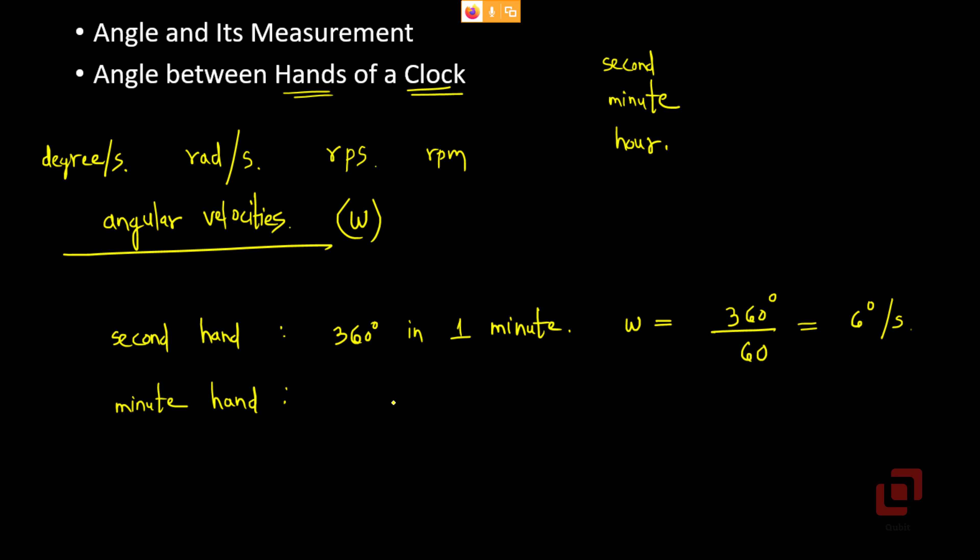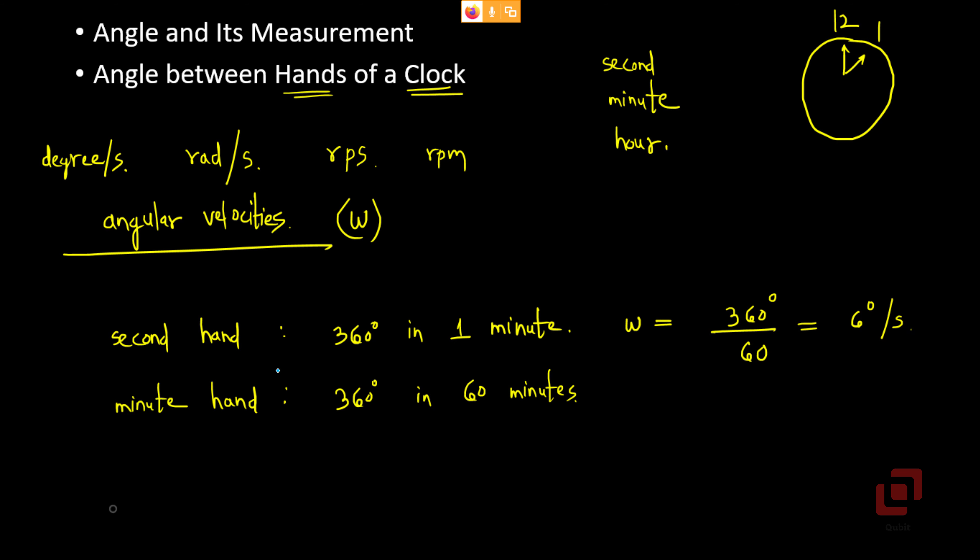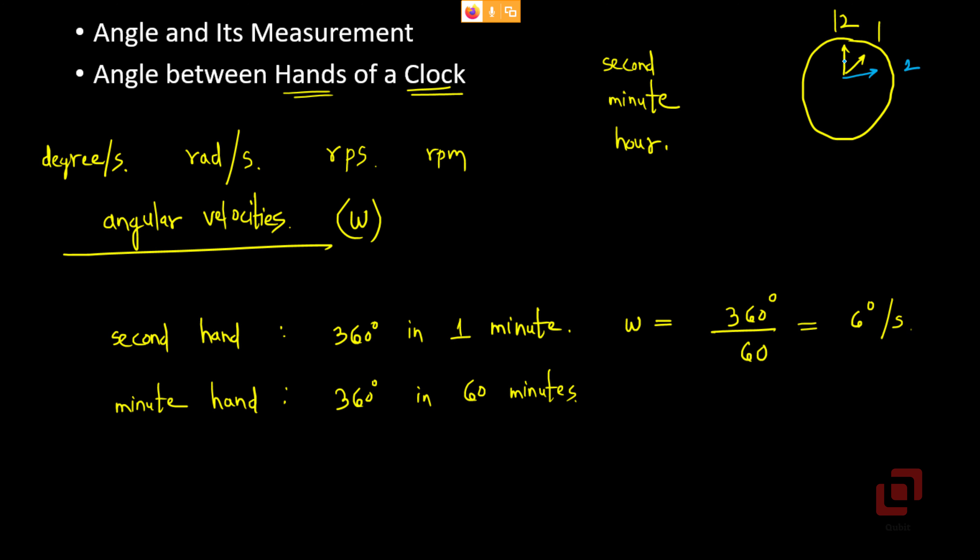Then let us go to minute hand. Now, minute hand covers 360 degrees in 60 minutes. So what will the angular velocity be? Because if it is currently 1 PM, at the time of 2 PM, the minute hand would have covered one full revolution in one hour or 60 minutes. So what will the angular velocity be? 360 degrees divided by 60 minutes or 3600 seconds. So how much is the angular velocity of the minute hand? It will be 1 tenth of a degree per second.